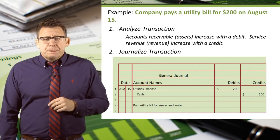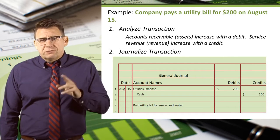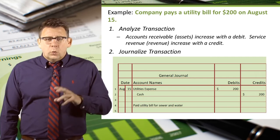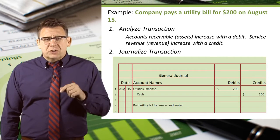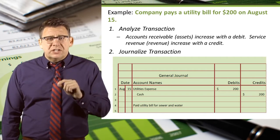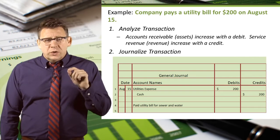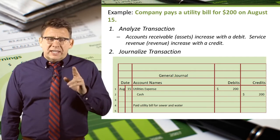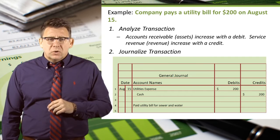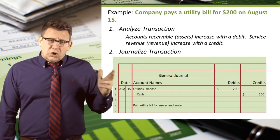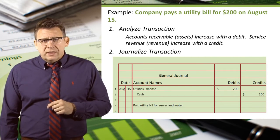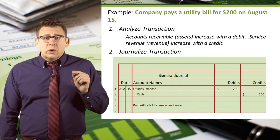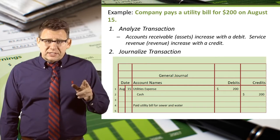The last example: a company pays a utility bill for $200 on August 15th. When we analyze this transaction, we determine that cash, an asset account, is decreased with a credit, and utilities expense, an expense account, is increased with a debit. So we'll enter the date, August 15th. We will then list the debit account first, so we will enter utilities expense.